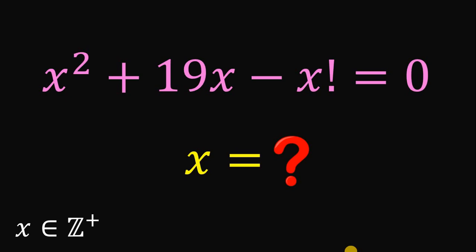Can you solve this math challenge? Here's the question. Solve for the value of x given that x squared plus 19x minus x factorial equals 0. You can pause this video if you want to give this problem a try.